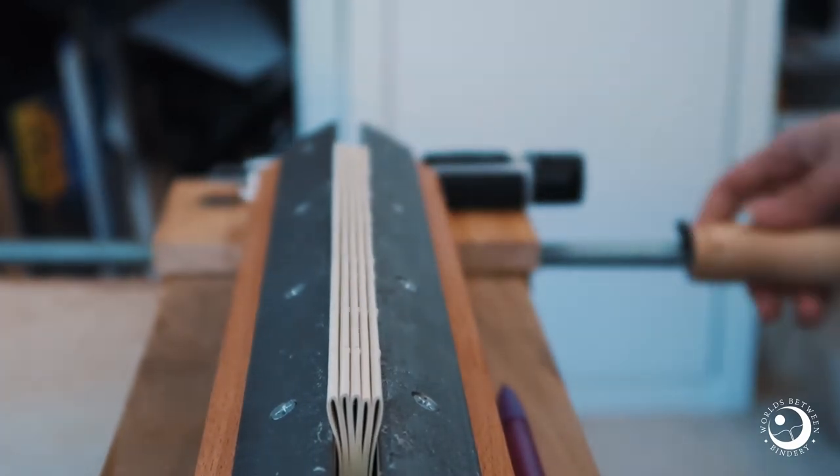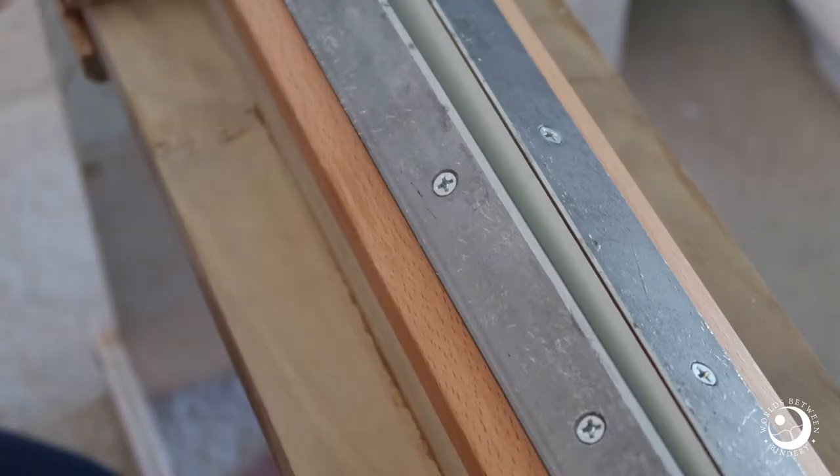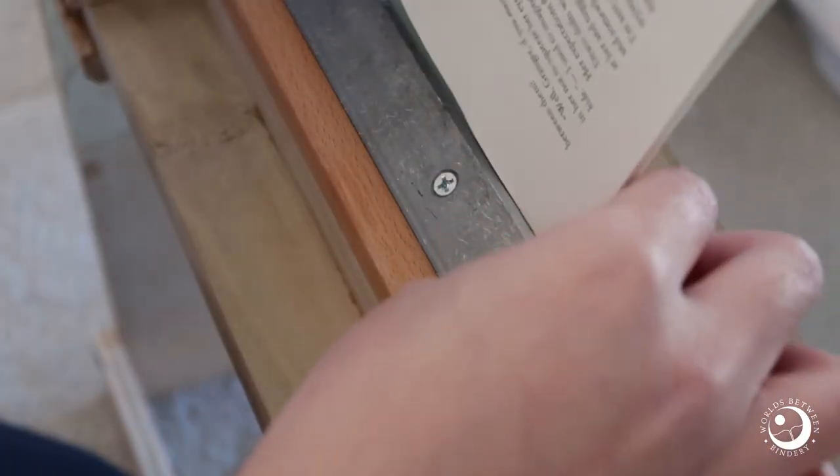This is because the thinner the signature, the easier it is to saw, and I don't have to slice too deep to get to the innermost folded page.